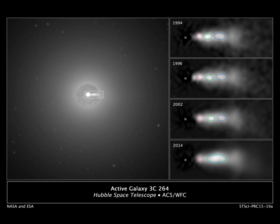Jet velocities when approaching the speed of light show significant effects of the special theory of relativity — for example, relativistic beaming that changes the apparent beam brightness. Massive central black holes in galaxies have the most powerful jets, but their structure and behaviors are similar to those of smaller galactic neutron stars and black holes. These SMBH systems are often called microquasars and show a large range of velocities. SS 433 jet, for example, has a velocity of 0.23 c.